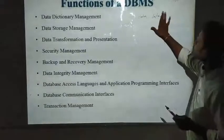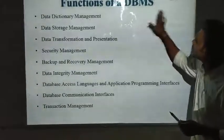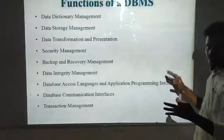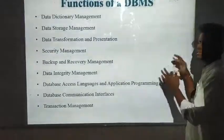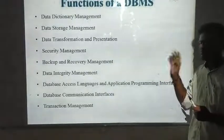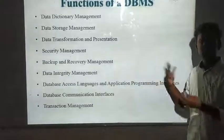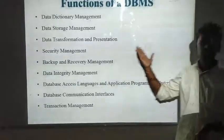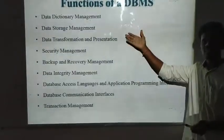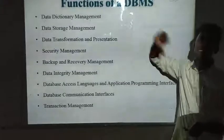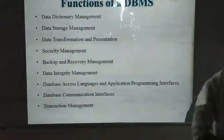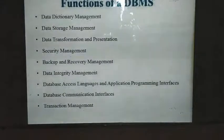Data dictionary management stores data about the data and maintains the relation among the data. It won't allow you to create a complex data structure to store relations among databases. It eliminates data dependence — meaning structural dependency. If you change any structure at the physical layer, that will be automatically reflected onto your data dictionary management. That is why we use the function called data dictionary management.